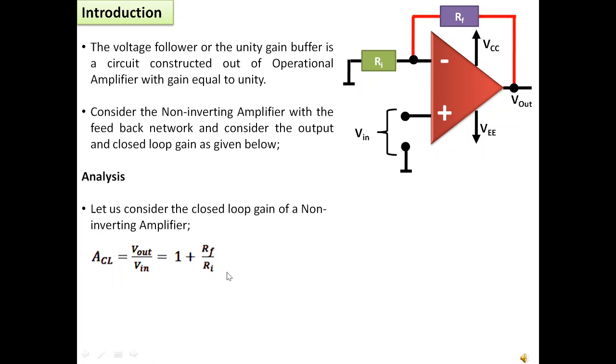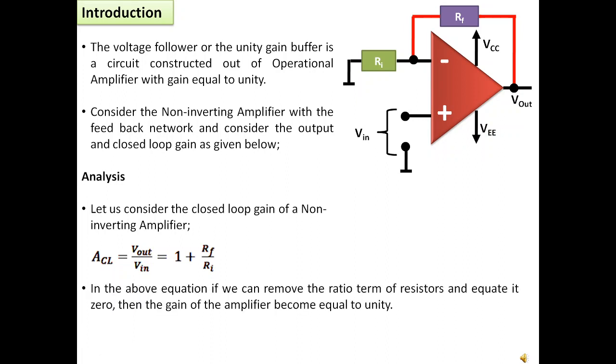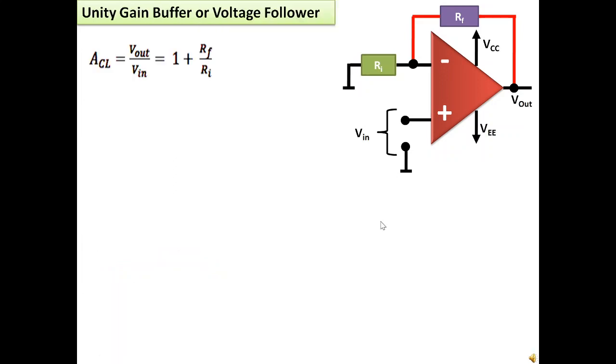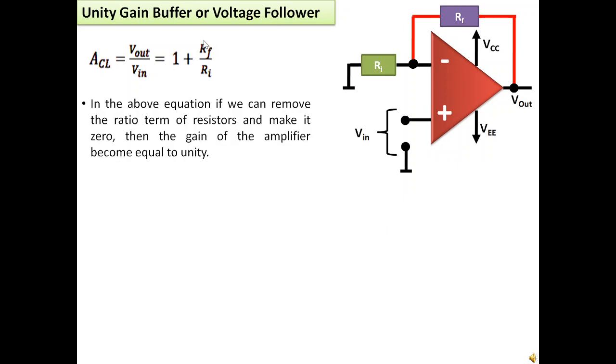Now in the above equation if we can remove the ratio term of resistors and make it 0, then the gain of the amplifier becomes equal to unity. This can be achieved only if the resistance Ri is very large or Rf is equal to 0.